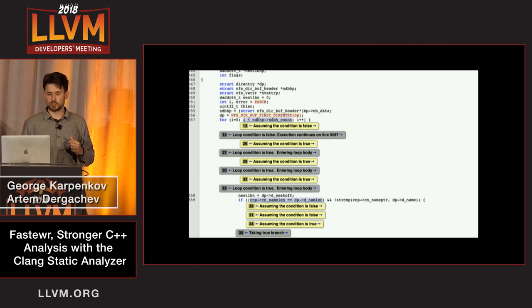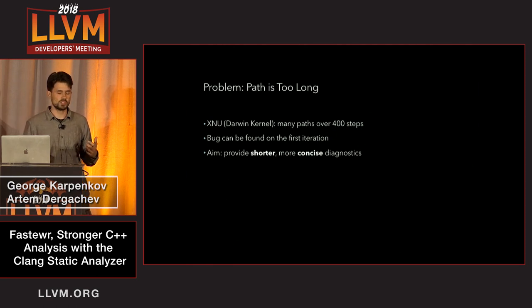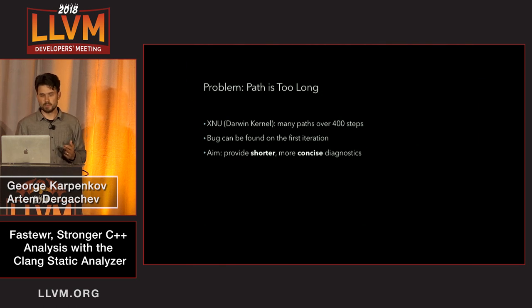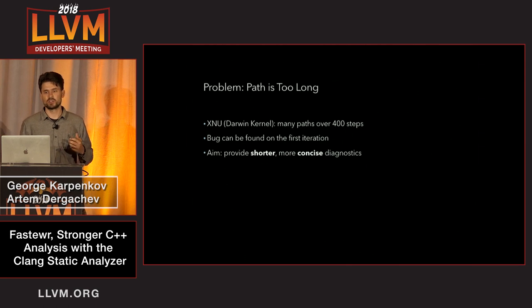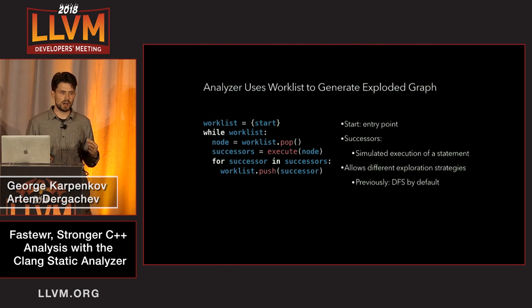This problem was quite ubiquitous on some code bases, most notably XNU, which is a Darwin kernel, and we've seen many paths which were very incomprehensible. By manual inspection, we have seen that it was actually possible to just find the bug on the first iteration. This work was started with an aim to provide shorter and more concise diagnostics.